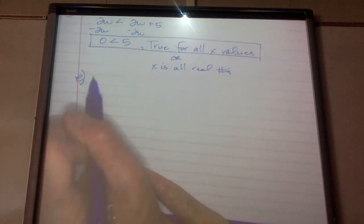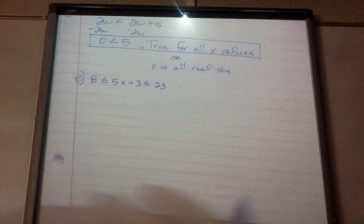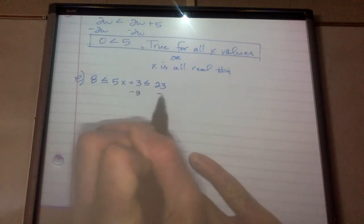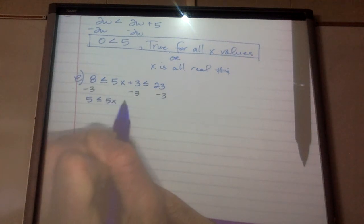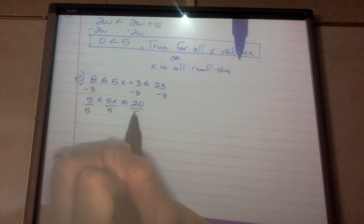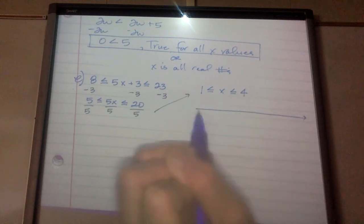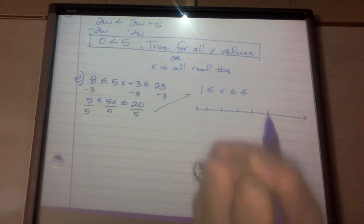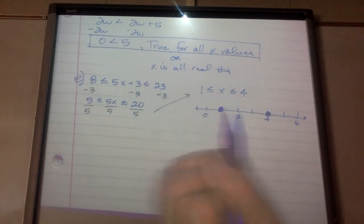Part E is a compound inequality: 8 is less than or equal to 5x plus 3, which is less than or equal to 23. First I subtract 3 from all three parts: 5 is less than or equal to 5x, which is less than or equal to 20. Then divide everything by 5: 1 is less than or equal to x, which is less than or equal to 4. On a number line with 0, 1, 2, 3, 4, 5, 6 — I'd have a closed dot at 1 and 4, and x is in between, so I shade in between.